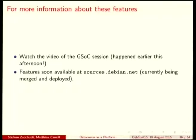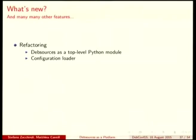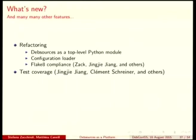Other new features that were not there one year ago: a bit of refactoring — now Debsources is a top-level Python module, intended for packaging Debsources, which will happen one day. New configuration. Now we are Flake8 compliant, which means better Python code. Test coverage: today we have 85% test coverage, which is way better than last year.